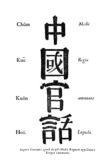Its pronunciation is based on the Beijing dialect, its vocabulary on the Mandarin dialects, and its grammar is based on written vernacular Chinese. Like other varieties of Chinese, Standard Chinese is a tonal language with topic-prominent organization and subject-verb-object word order.